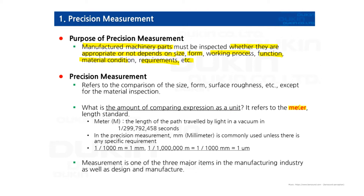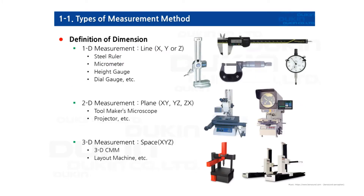Neuromeasure uses meter-based units, but also supports inches, radian, degree, and DMS as well. Now let's look at the types of measurement methods.